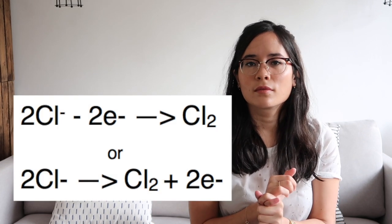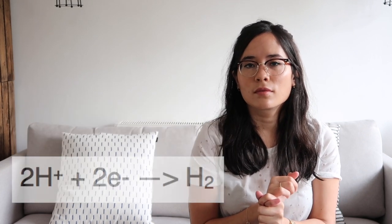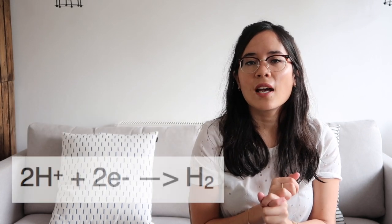Write the two ionic equations for hydrogen and chlorine production. Therefore, what is left over in solution at the end? That would be sodium hydroxide.